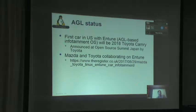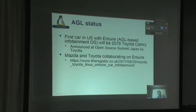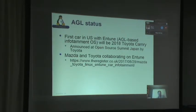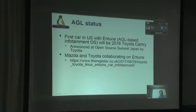Miscellaneous news: AGL, Automotive Grade Linux. I was at Open Source Summit Japan in June, and it was announced there that the first car in the U.S. with an AGL-based infotainment unit will be shipping this fall — the 2018 Toyota Camry is using an AGL-based infotainment OS. Mazda and Toyota are collaborating on that as well, so Mazda is getting involved. AGL is really starting to take off and appearing in the first products in the industry. We'll see more and more Linux used in automobiles.